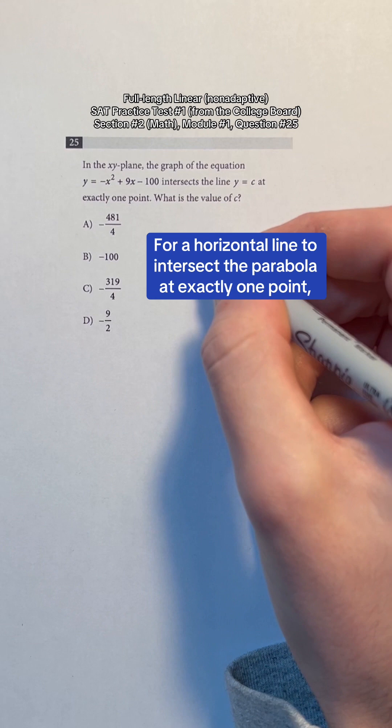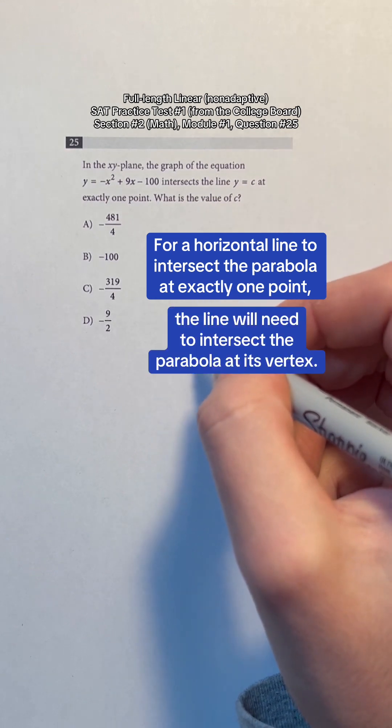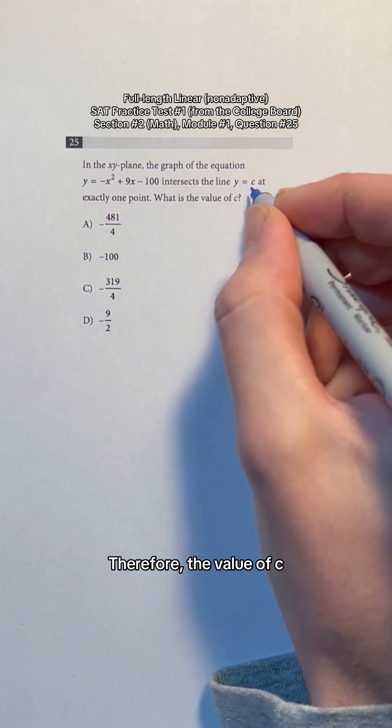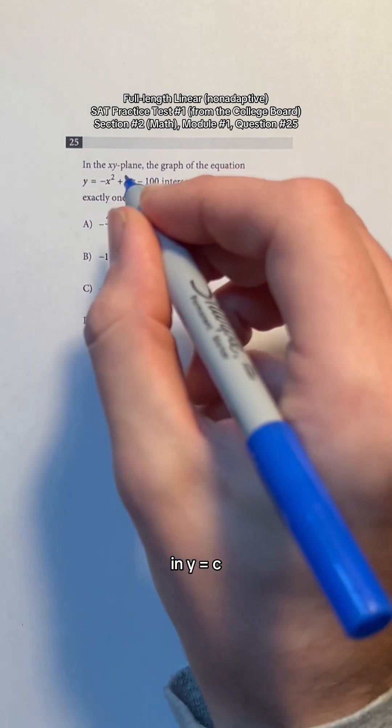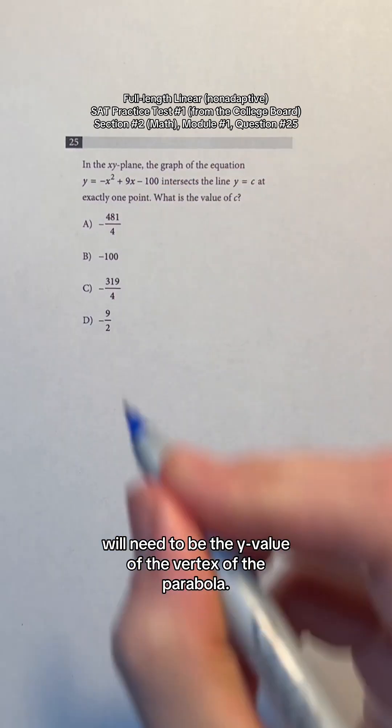For a horizontal line to intersect the parabola at exactly one point, the line will need to intersect the parabola at its vertex. Therefore, the value of c in y equals c will need to be the y value of the vertex of the parabola.